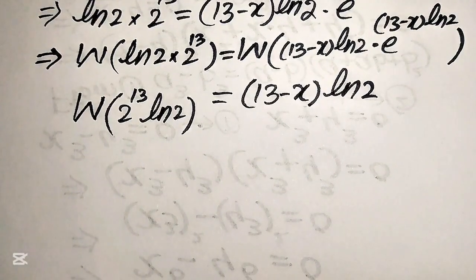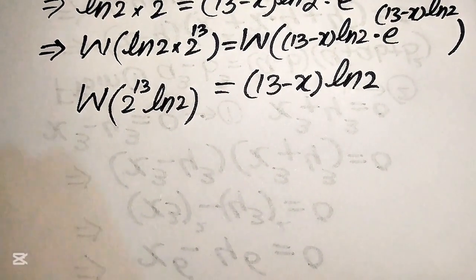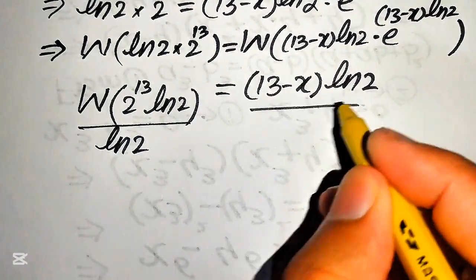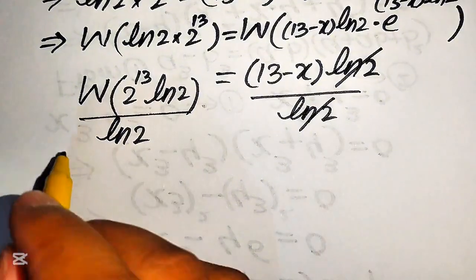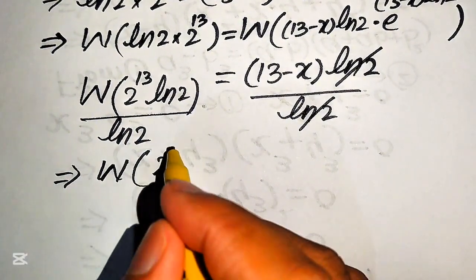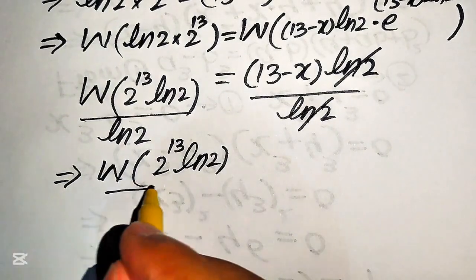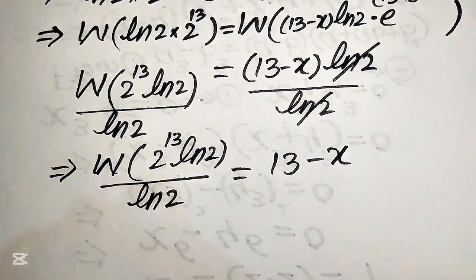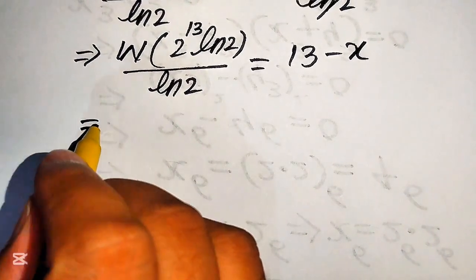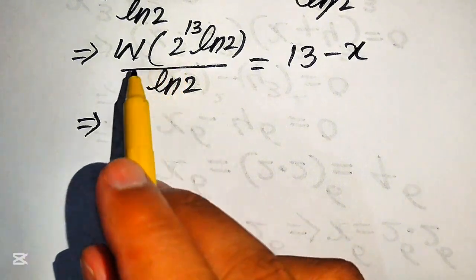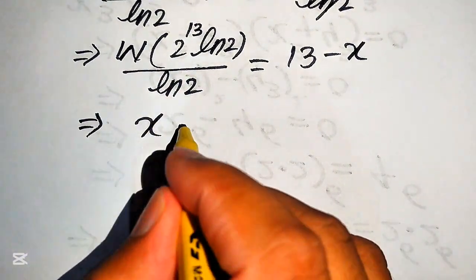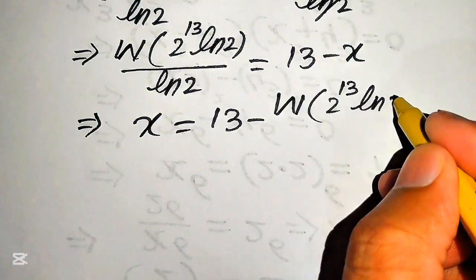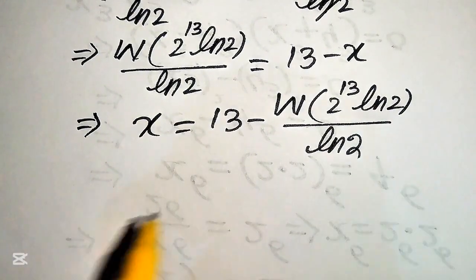After applying the Lambert W function, we have W of 2 to the power of 13 times log 2 equals 13 minus x times log 2. To solve for x, we divide both sides by log 2, which cancels on the right, giving W of 2 to the power of 13 times log 2 divided by log 2 equals 13 minus x. Rearranging, x equals 13 minus W of 2 to the power of 13 times log 2 divided by log 2.